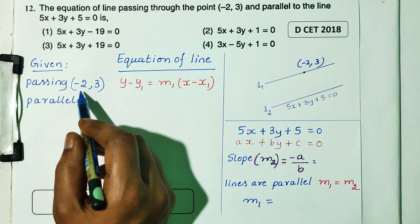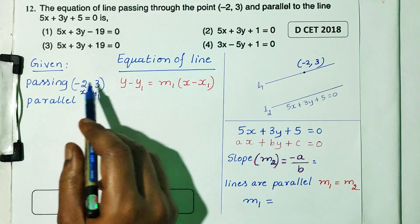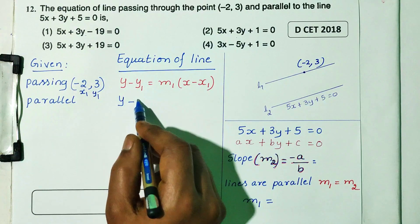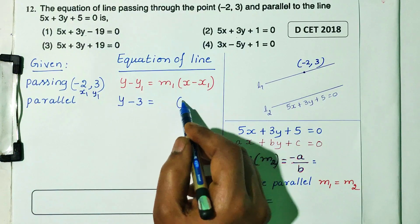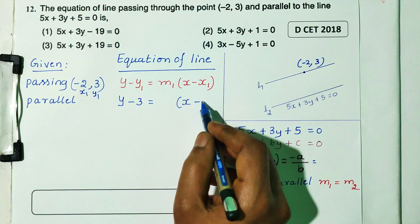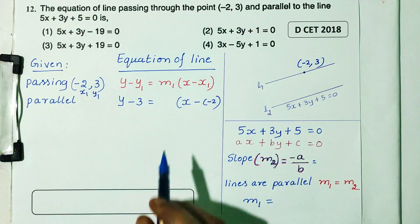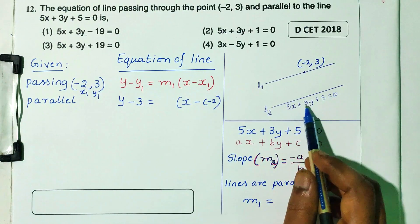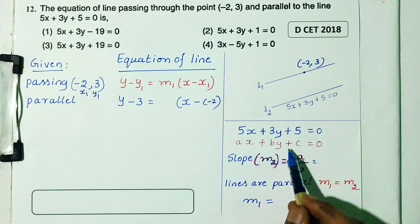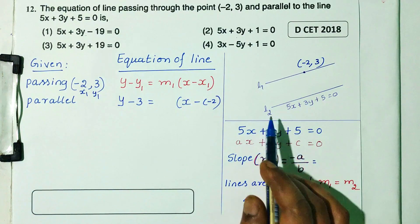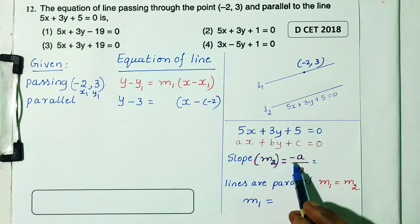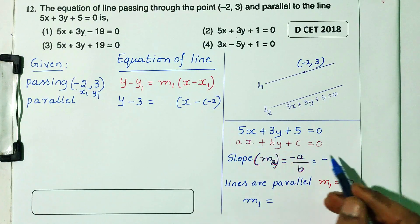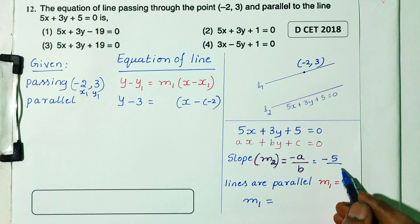The passing point gives x1 and y1. For two parallel lines, we compare the line equation to ax plus by plus c equals 0. The slope formula is m equals minus a divided by b. Here a equals 5 and b equals 3, so slope m2 equals minus 5 by 3.